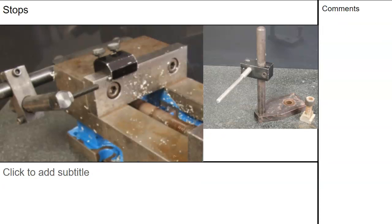Work stops: you have different work stops and you'd choose one — I wouldn't use both at the same time. This one might be out of the way. Pretty much do not want it in the line of the tool. This one mounts to the table and has a variable length extension.